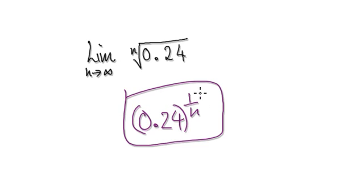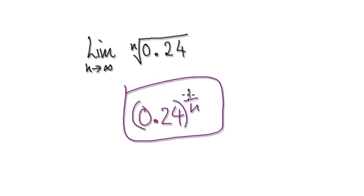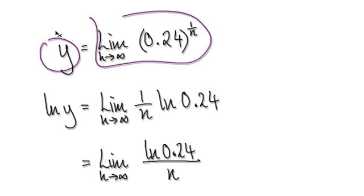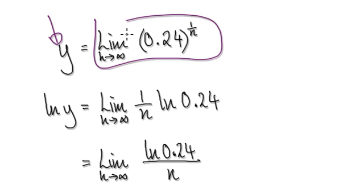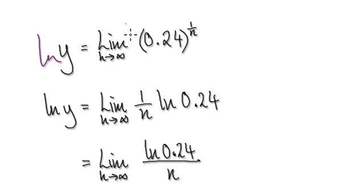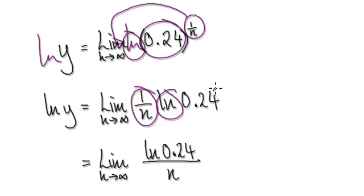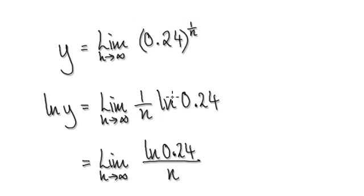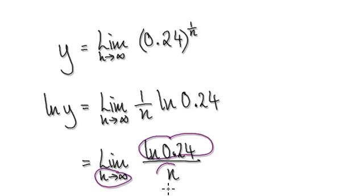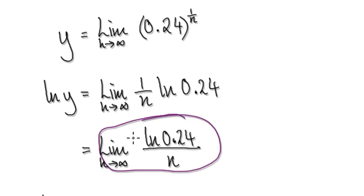Now when you have something to the power of another thing, think about logs. Let's say the limit of this as n tends to infinity is y — it is a y that we're seeking. So from here, take the natural log of both sides: natural log of y equals natural log of that expression. The power of 1 over n comes down, giving you the natural log of that small constant divided by n. This is a constant, and as n tends to infinity the denominator gets bigger and bigger, so the limit here is going to be 0.